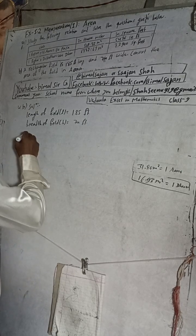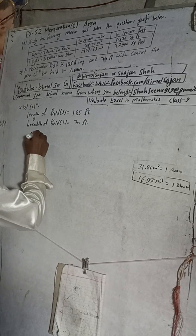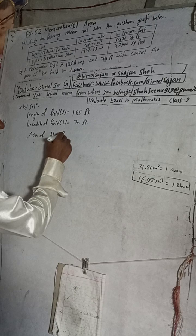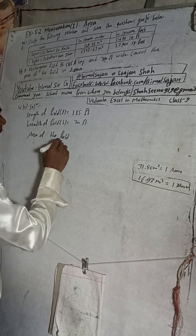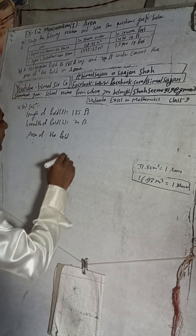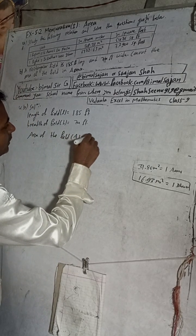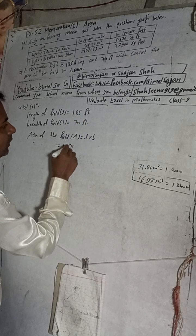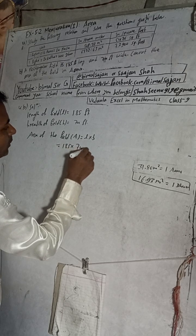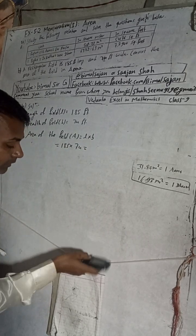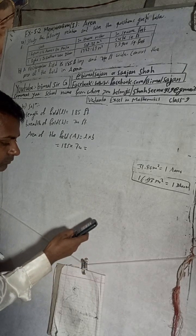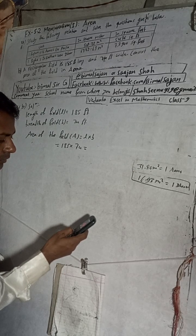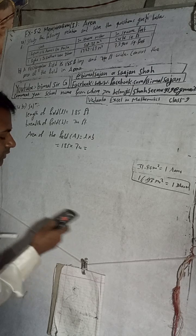Now area of the field, A is equal to, what is the field? Apply L into B. So L is 185 into 74. 185 into 74 equals 13,690.